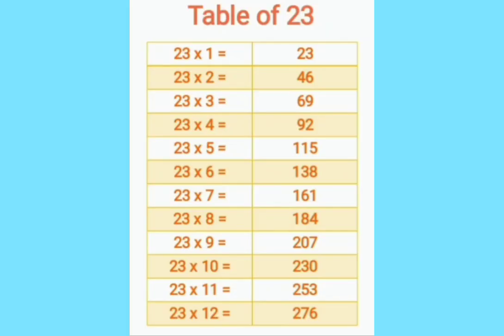23 ones are 23. 23 twos are 46. 23 threes are 69. 23 fours are 92. 23 fives are 115. 23 sixes are 138. 23 sevens are 161. 23 eights are 184. 23 nines are 207. 23 tens are 230. 23 elevens are 253. 23 twelves are 276.